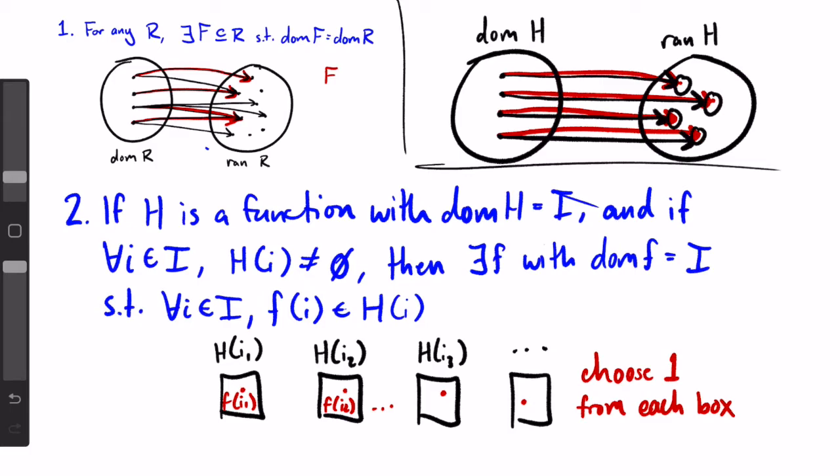And now we can finally explain why form one is the same as the axiom of choice. In form one, instead of mapping each element in the domain to a set h(i), we've mapped it to some elements in the range of r. For each input, the set of outputs in the range of r is equivalent to h(i). So in form one, when we're picking one output for each input, what we're really doing is just picking one f(i) from each h(i).